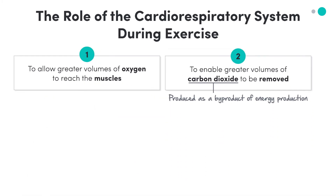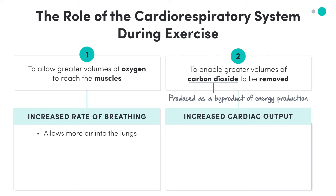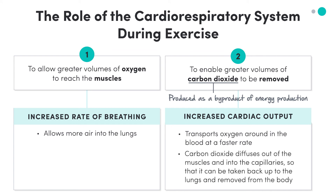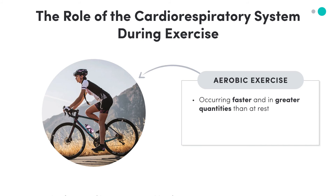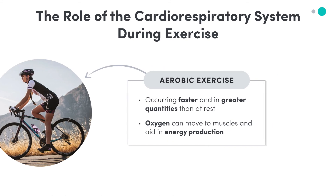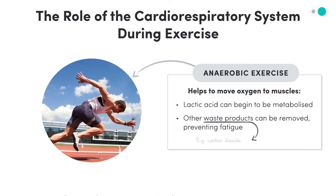To achieve these two goals, we firstly need more air to begin with. So the rate of breathing increases to allow more air into the lungs, and cardiac output increases so that this oxygen can be transported around the body at a faster rate. At the same time, the increased quantities of carbon dioxide diffuse out of the muscles and into the capillaries so that it can be taken back up to the lungs and removed from the body. During aerobic exercise, this process happens a lot faster and in greater quantities than at rest so that oxygen can move to the muscles and aid in energy production. During anaerobic exercise, this process helps to move oxygen to the muscles so that lactic acid can begin to be metabolized and other waste products such as carbon dioxide can be removed, preventing fatigue.